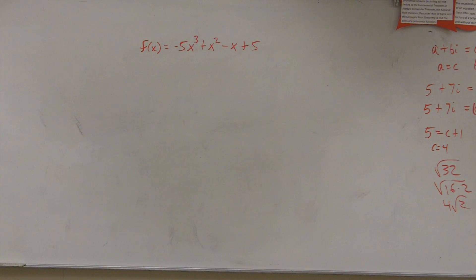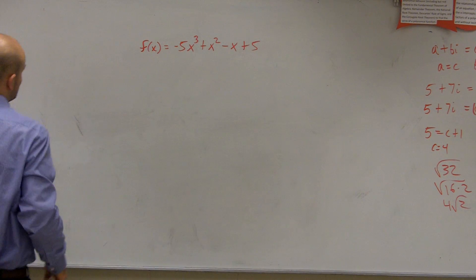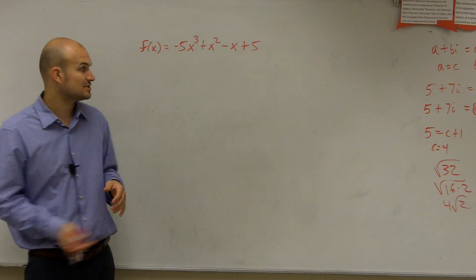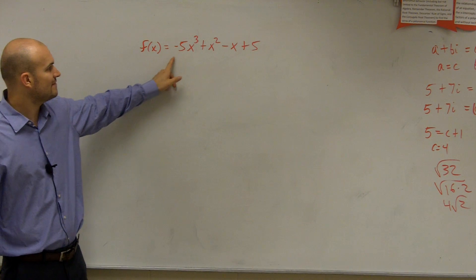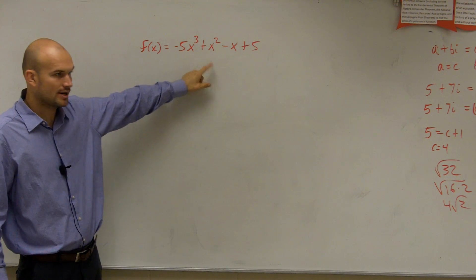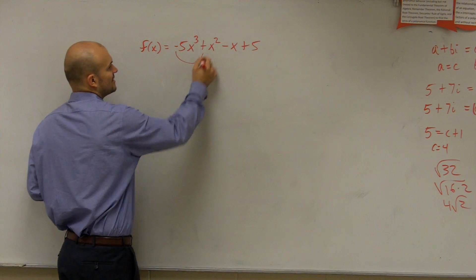Okay, so by using Descartes' rule of signs, if I take f(x), I need to determine the variations of the sign of the coefficients. So I have a negative 5x to a positive x squared. Is that a variation of a sign?